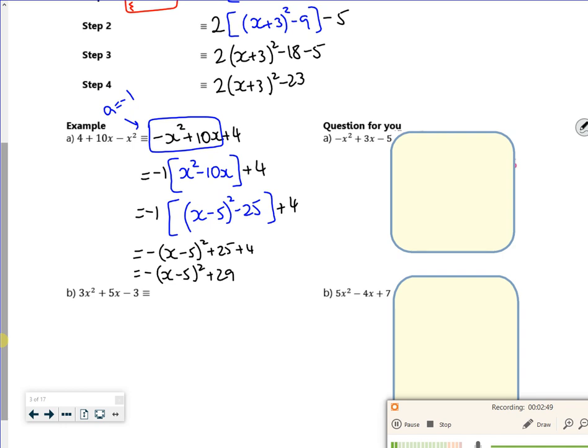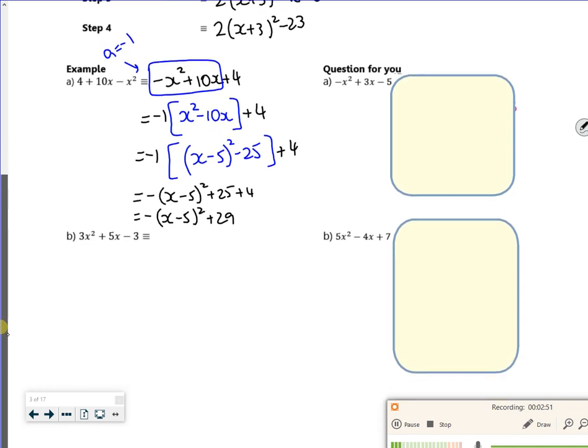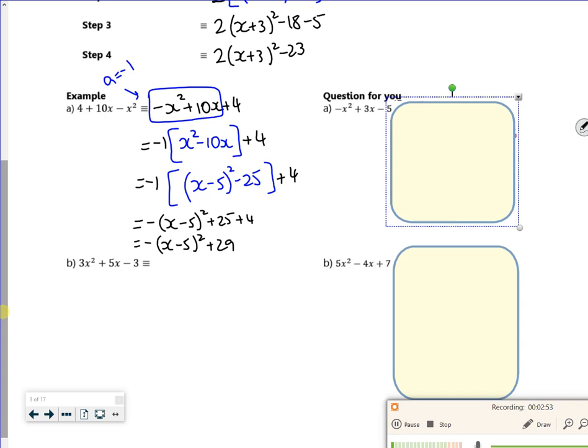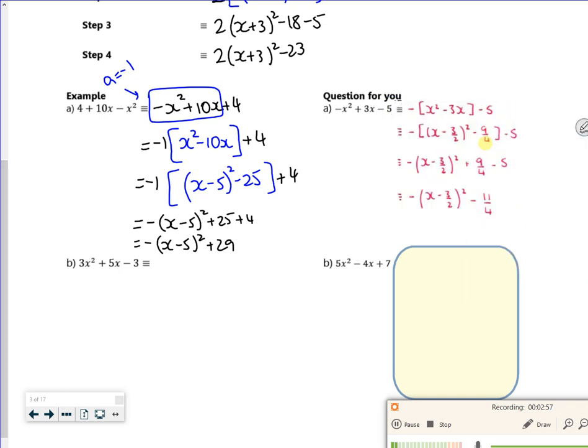I'll do b, and then we can look at the questions for you. So I'll do a question for you for this one. Make sure you've got it the same there. You've got to be careful because it's a 3. You've got 3 over 2, which when you square it, is a 9 over 4. So you've got to be careful with that one.